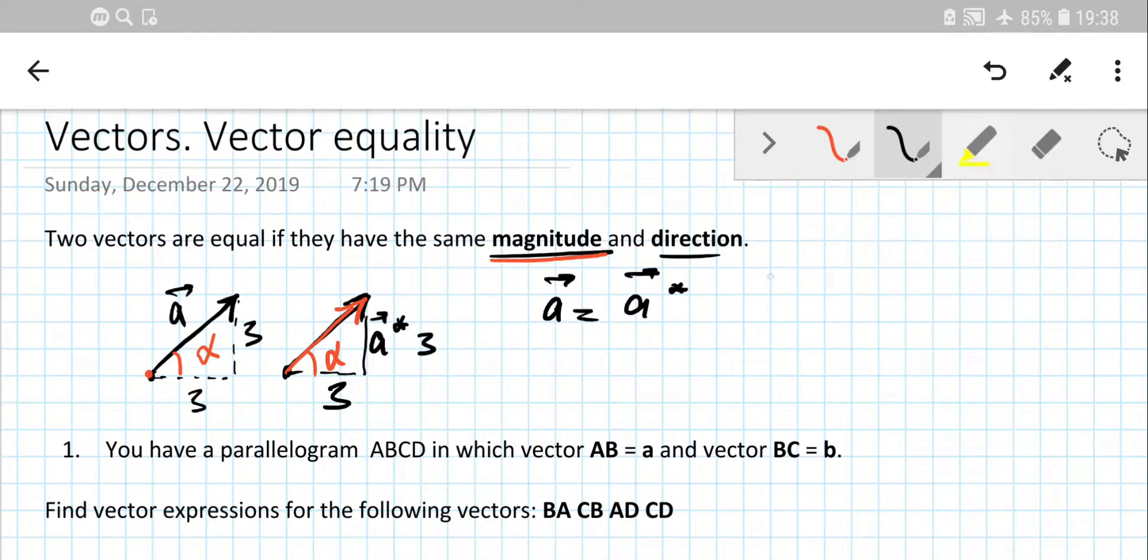And that means any vectors which have the same length or magnitude and direction, no matter where it is in space in the 2D plane, are considered to be equal. So you can have multiple vectors which are equal if they have the same magnitude and directions.